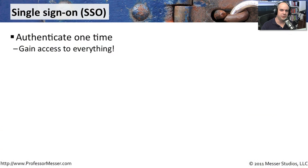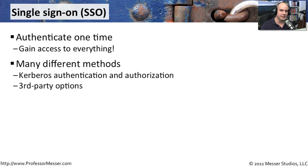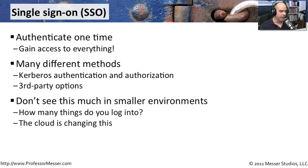If you're in a medium to large environment, you may have heard of this concept of single sign-on. It just makes sense if you have so many different resources that you need access to — it would be a lot easier if we could just authenticate one time and have access to everything. There are many different ways to do this, and it's a relatively complex process behind the scenes. We've already talked about Kerberos, which is one of the more popular ways to provide single sign-on to the network. There are also a number of third-party options available. You really don't see this much in smaller environments because of the complexities involved in setting something like this up.